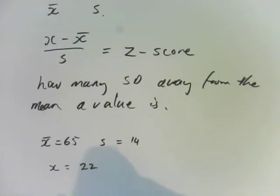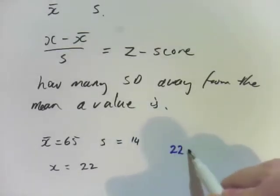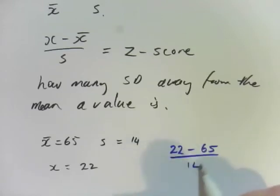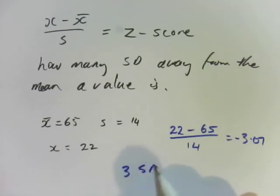All you do is you use those three values in our formula. You do 22 minus 65 divided by 14. And if you work that out on the calculator, you come out to negative 3.07. So that is three standard deviations below the mean.